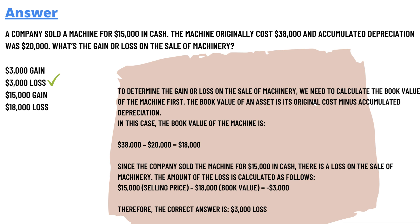So if we subtract eighteen thousand dollars from fifteen thousand dollars, we have three thousand dollars of a loss. Since the company sold the machine for fifteen thousand dollars in cash, there is a loss on the sale of machinery of three thousand dollars.